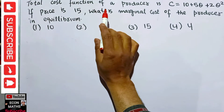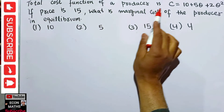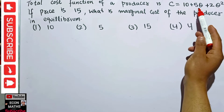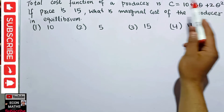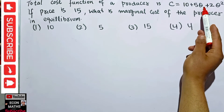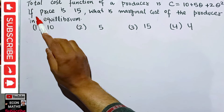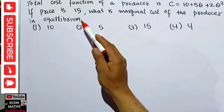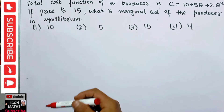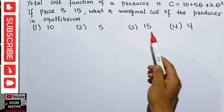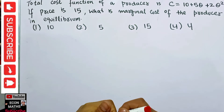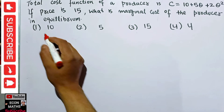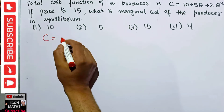The question is: the total cost function of a producer is given as C = 10 + 5q + 2q², where C is the total cost and q is the quantity. If the price is 15, what is the marginal cost of the producer in equilibrium? The options are 10, 5, 15, and 4.